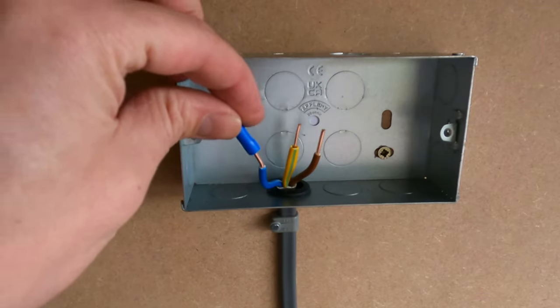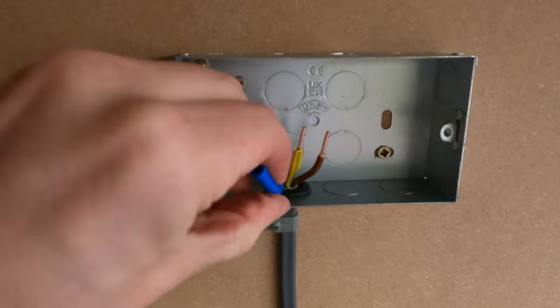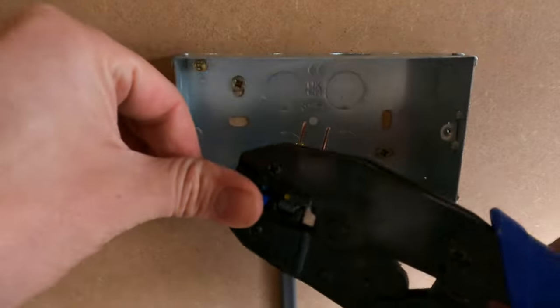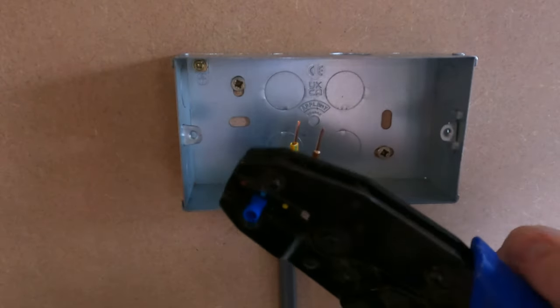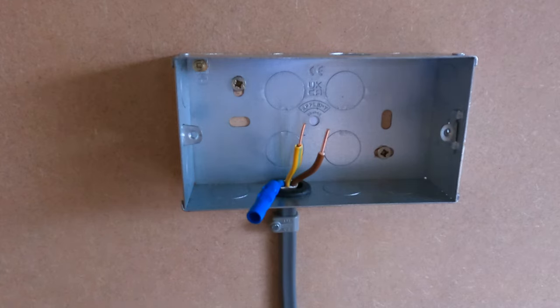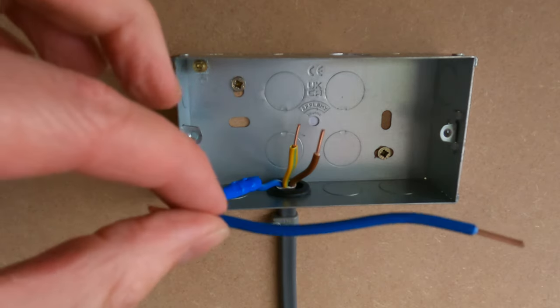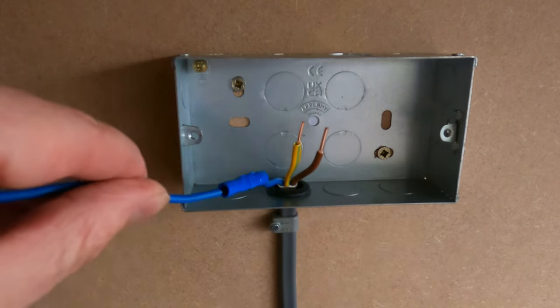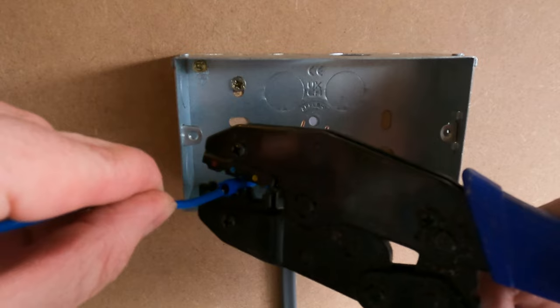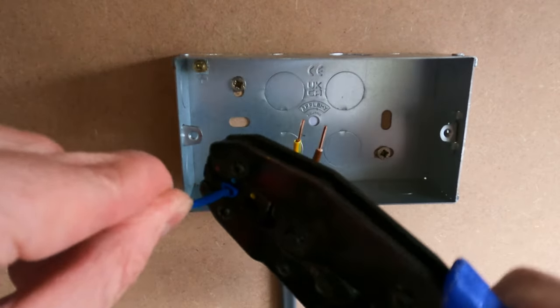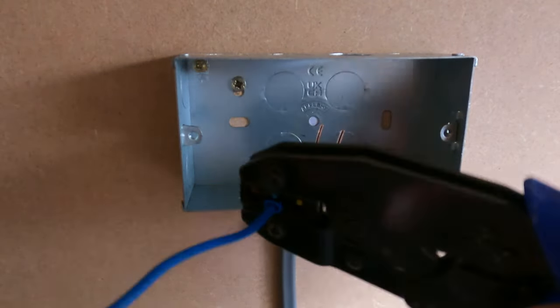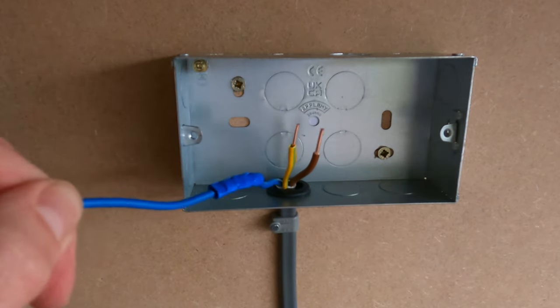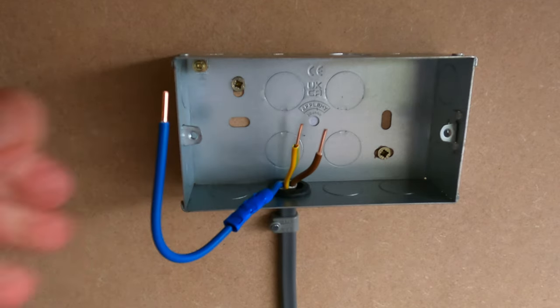So grab your crimp and pop it onto the end of the cable. Then grab your crimping tool and put it into the appropriately sized slot and squeeze down the handle. And that has crushed the crimp onto our wire. Then go ahead and grab your extended piece of wire, pop it in the crimp, line the tool up with the crimp and crush down on it. And that has ensured a good firm connection.